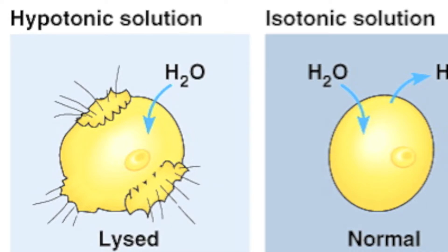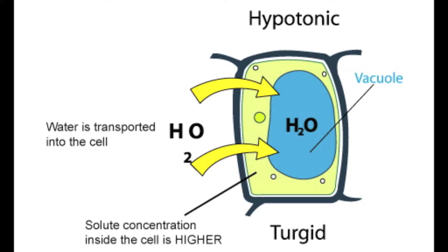In a hypotonic solution, water will enter the cell faster than it comes out, bloating the cell, making it swell up and eventually burst and die.